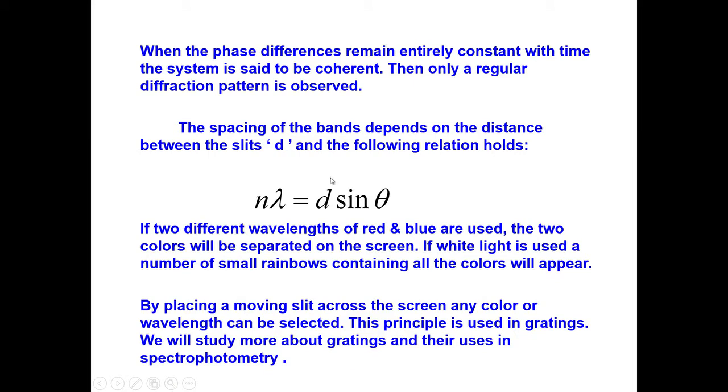We can use this equation: n lambda = d sin theta. If two different wavelengths of red and blue are used — making them pass through the same pinhole — the two colors will be separated on the screen. If we use white light, we see a number of small rainbows on the screen across the pinholes. By placing a moving slit across the screen, any color or wavelength can be chosen — that is the fundamental principle of how we choose a wavelength in a spectroscopic technique.